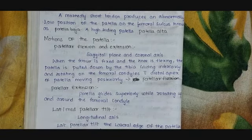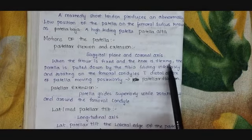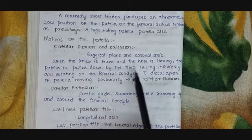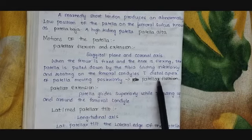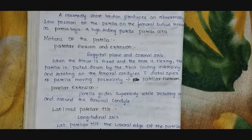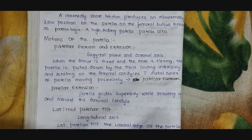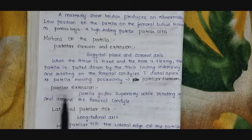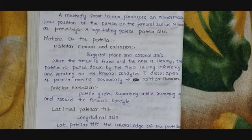When you flex the knee, the patella moves inferiorly. The patella is pulled down by the tibia gliding inferiorly and rotating on the femoral condyle, with the distal apex of the patella moving posteriorly — this is patellar flexion. When you extend the knee, the patella glides superiorly while rotating up and around the femoral condyle — this is patellar extension. So in patellar flexion the patella moves inferiorly, and in patellar extension the patella moves superiorly.